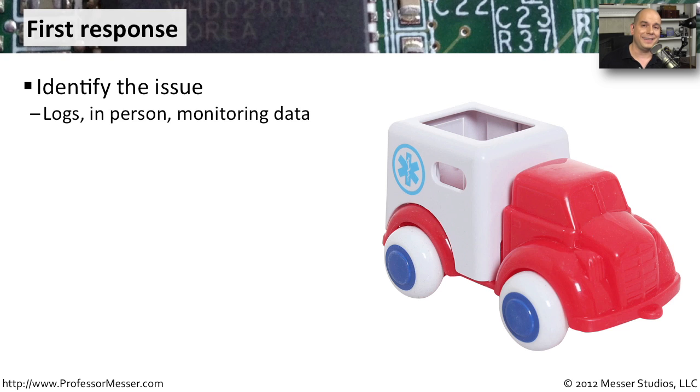One of the first things is identifying the problem to begin with, and that will be the first response to the issue. You may have logs that are identifying the inappropriate use on the network. You may be seeing this information in person on someone's desktop, or there may be data that you can monitor going over the network that identifies the inappropriate use.